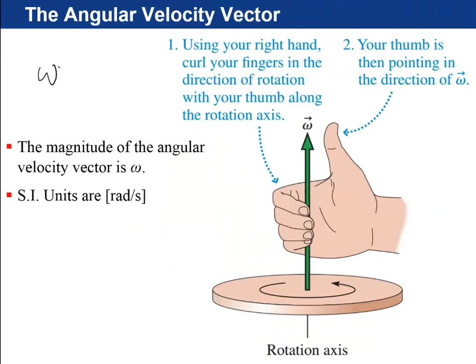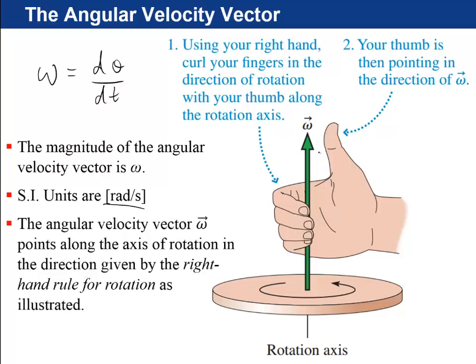Remember that angular speed, omega, was d theta by dt, the time derivative of the angular position, and that had units of radians per second. So now we want to have a vector version of that. The way we do it in physics is that we say the angular velocity vector, omega, points along the axis of rotation.